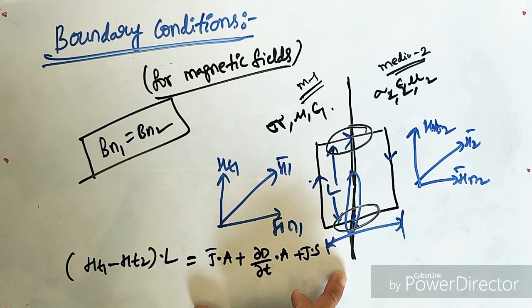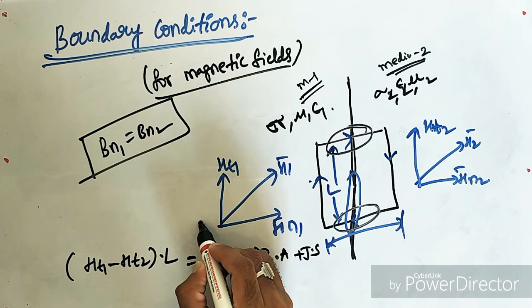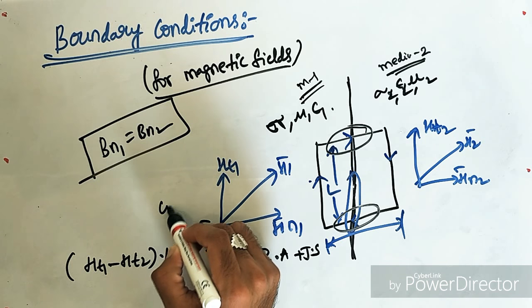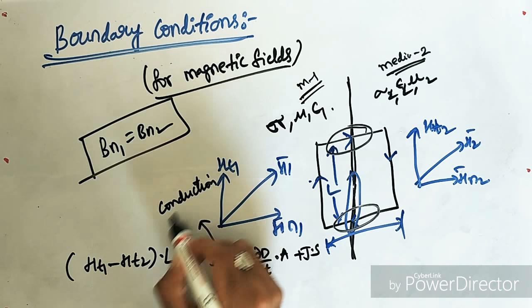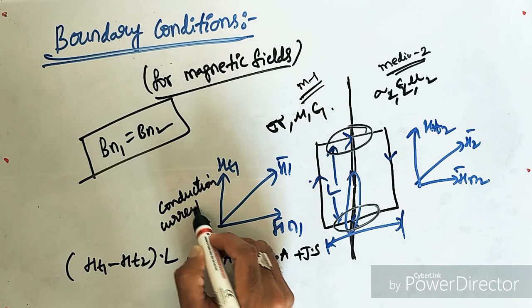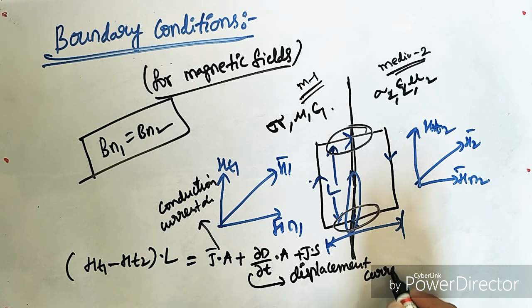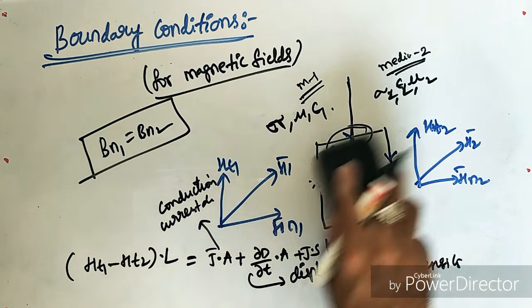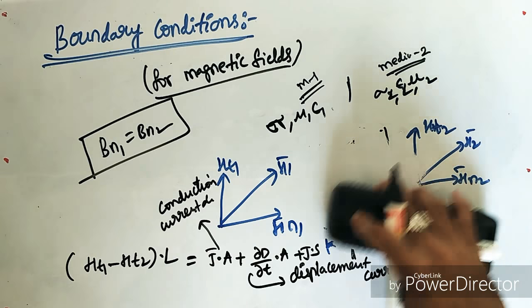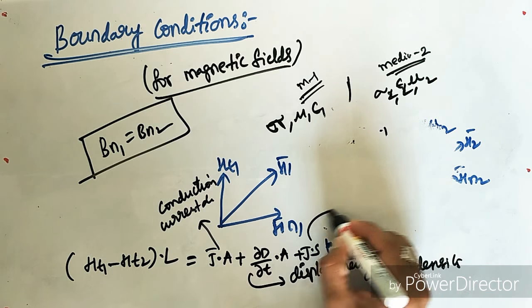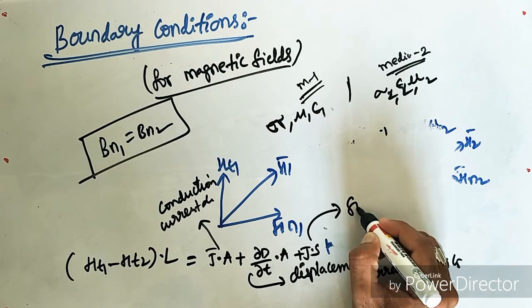Here, all the currents will come into significance. This is called the conduction current density and this is called the displacement current density. And this will be my surface current density.